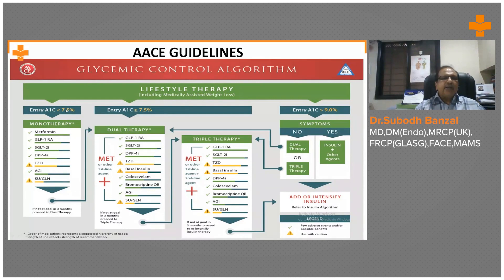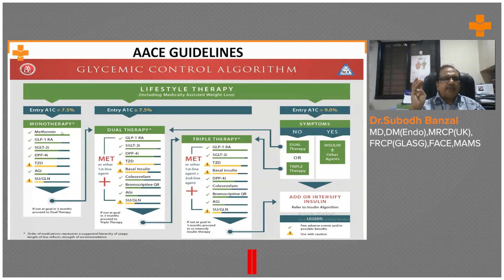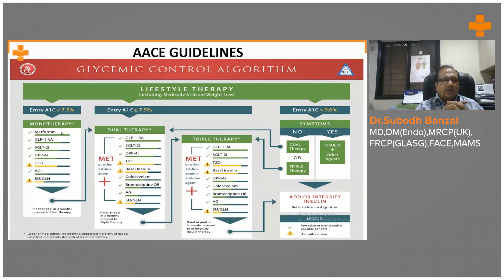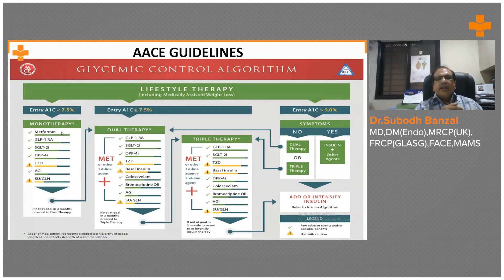At entry, if A1C is less than 7.5, you give monotherapy — metformin, GLP-1 receptor analogues, SGLT2 inhibitor, AGI, or sulfonylurea. Metformin and GLP-1 receptor analogues are the preferred ones; now people are talking more of SGLT2 inhibitor. Glitazones have gone down, and sulfonylureas have their own problems. If A1C is more than 7.5, you add on a second agent. If A1C is more than 9 and patient is symptomatic or not symptomatic, you can add a third drug.